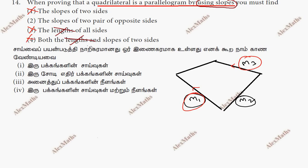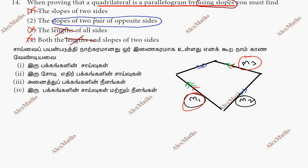The third and fourth option is about the length of the sides. Using slope, the slope of the two pairs of opposite sides — suppose if we have opposite pairs, this pair of slopes is equal, this pair is parallel, this pair of slopes is equal, this pair is parallel. So the slopes of two pairs of opposite sides being equal means it is a parallelogram.